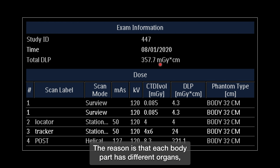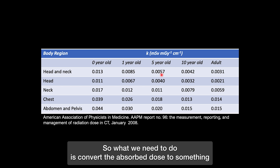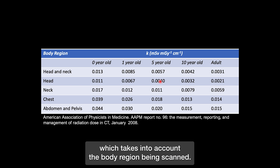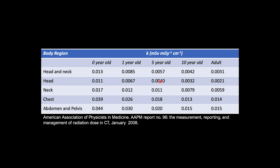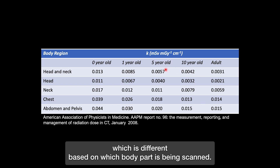The reason is that each body part has different organs, and those organs have different sensitivities to radiation. So what we need to do is convert the absorbed dose to something called the effective dose, which takes into account the body region being scanned. To do this, we take the DLP number and multiply it by a conversion factor, which is different based on which body part is being scanned.